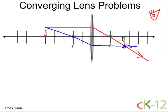Well, let's take a look at solving this problem using the lens equation to see how accurately our ray tracing came about. So the lens equation is 1 over the focal distance equals 1 over the object distance plus 1 over the image distance.